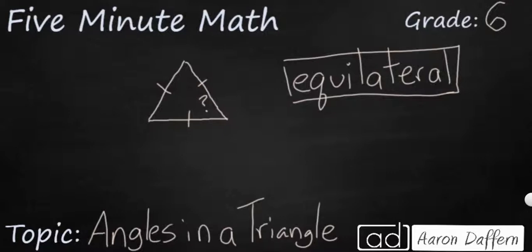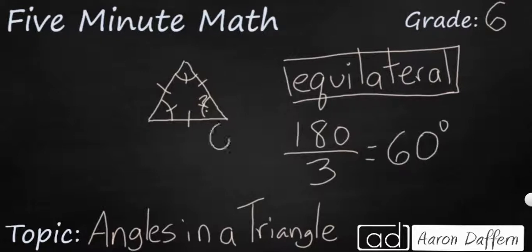So if we have our 180 degrees and we have three angles and they're all equal, that simply means we're going to take our 180 and we're going to divide it by three so that each angle is going to be 60 degrees, because 60 times 3 is going to be 180 degrees.